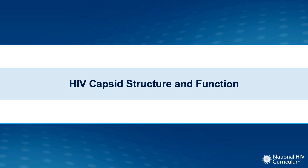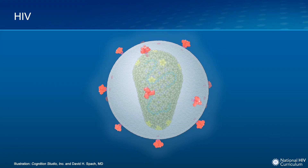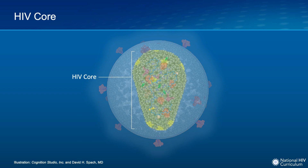To gain an in-depth understanding of the HIV capsid inhibitors, it's important to start by reviewing basic concepts related to the normal structure and function of the HIV capsid. Let's step back and look at an intact HIV virion. Each virion has an inner cone-shaped structure. This cone-shaped structure, including all of the contents inside it, is referred to as the HIV core.